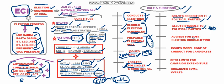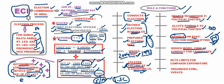ECI holds advisory jurisdiction for post-election disqualification. If an elected member is found to have committed fraud or other violations, ECI can advise that the member be disqualified. ECI also issues the Model Code of Conduct for candidates and political parties during the election period and prior to elections, prohibiting any activities beyond what ECI mandates.